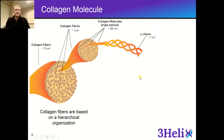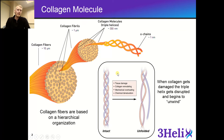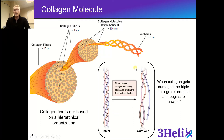Collagen fibers are based on a hierarchical organization where collagen fibers are made up of collagen fibrils, and these are composed of collagen molecules. The collagen triple helix is composed of three individual alpha chains that come together and assemble to form the collagen triple helix. In a natural healthy collagen molecule, this triple helix remains intact, but it can be damaged, and when it becomes damaged, it starts to unfold or unwind.